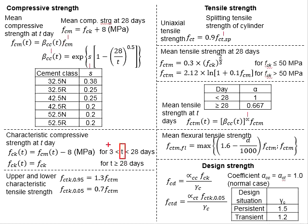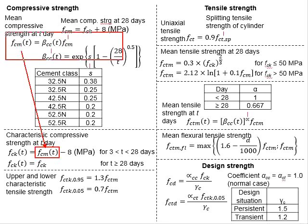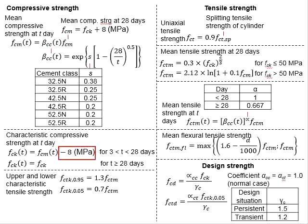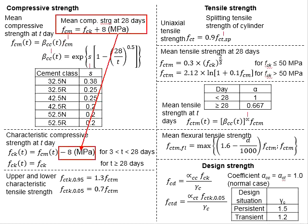However, for T within the range of 3 days to 28 days, you will need to obtain FCM_T as discussed, then subtract 8 MPa, which is in accordance with the concept of normal distributions.